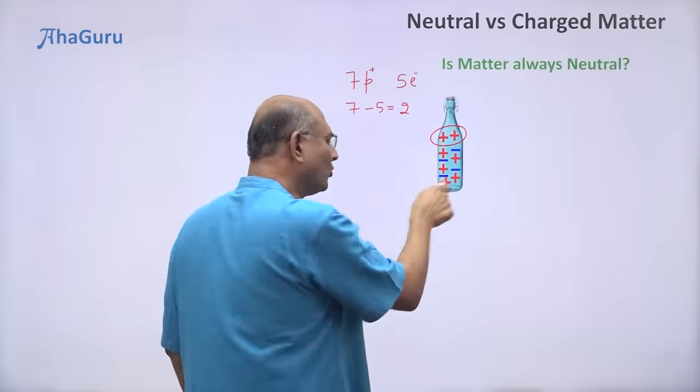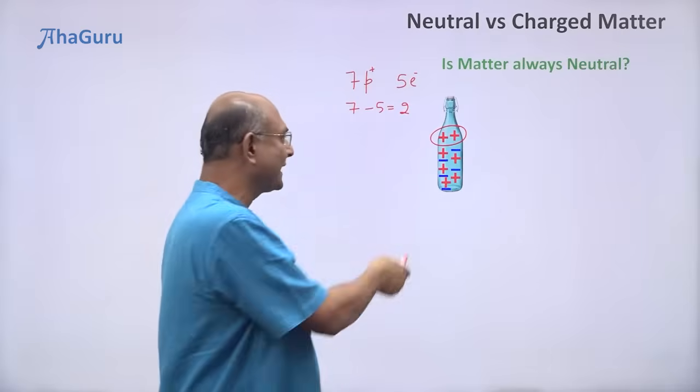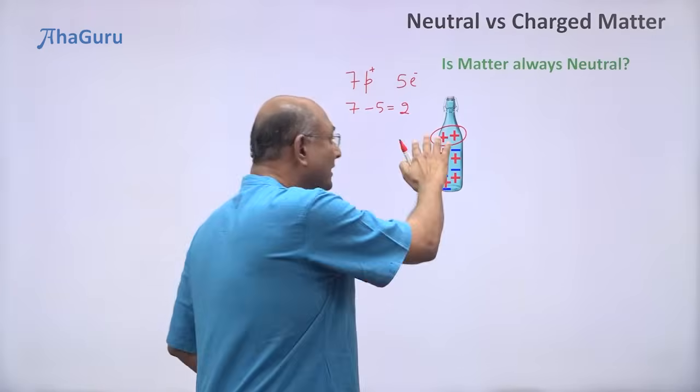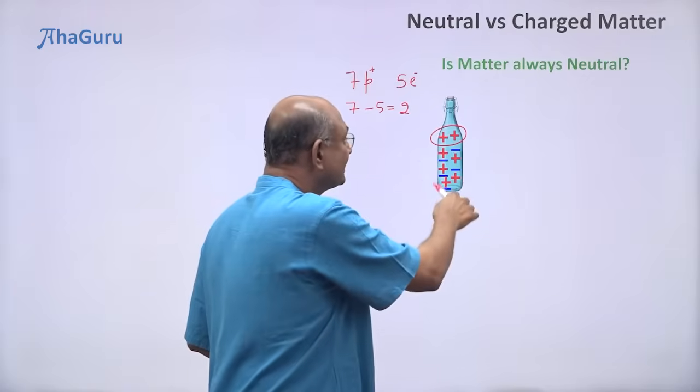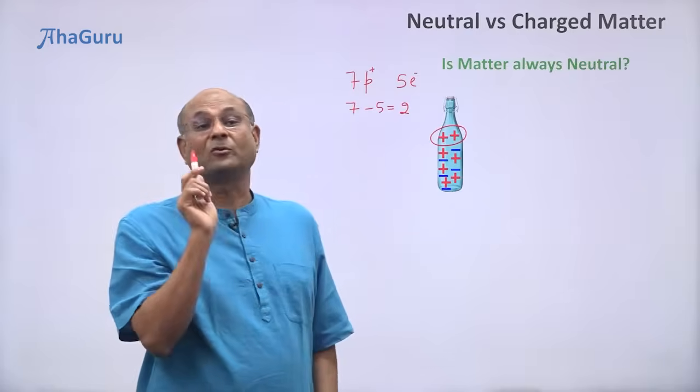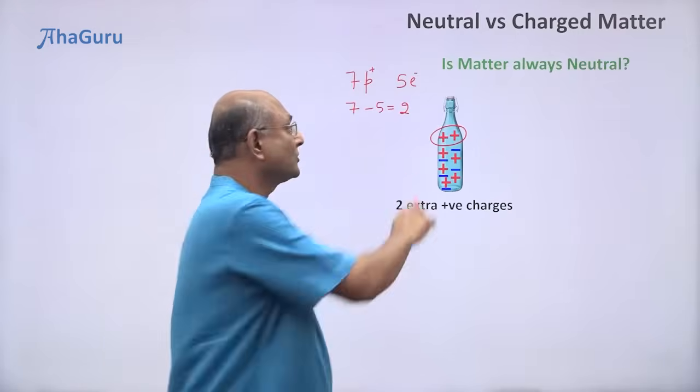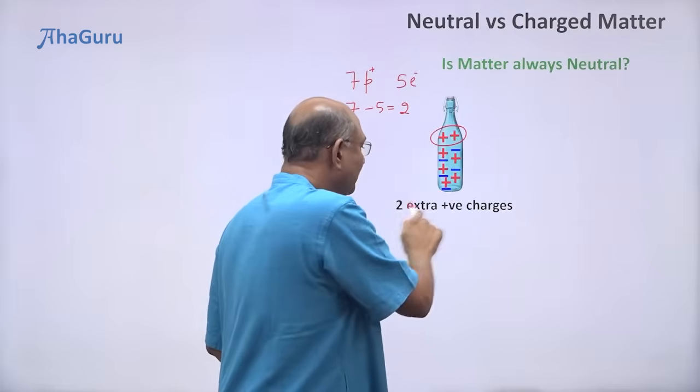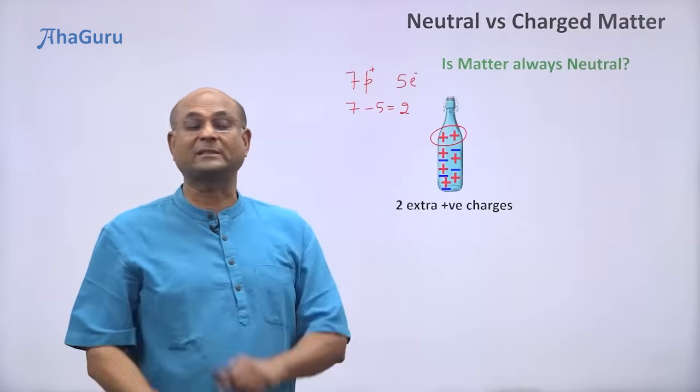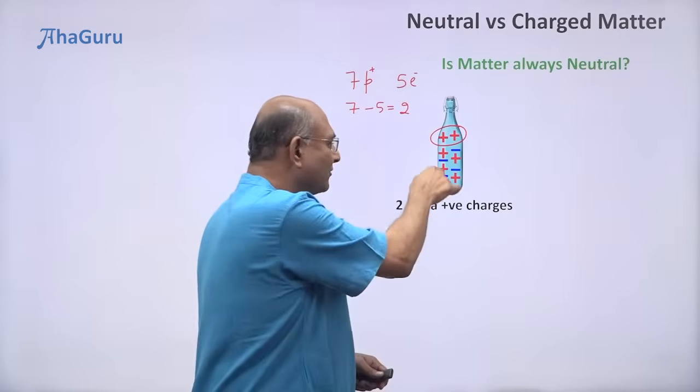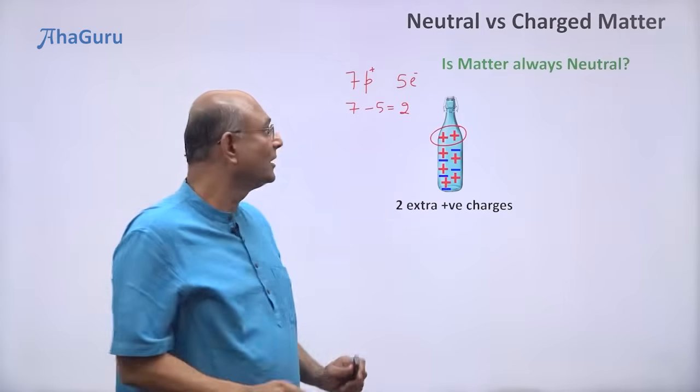It has huge number of overall protons, trillions, I have just shown you as seven, but actually you must think about it as trillions of protons, trillions of electrons, but there is an excess of two protons. So it has two extra positive charges. So the net charge on this basically comes from those two extra protons because all the rest protons and electrons, you can think of them as basically cancelling out.